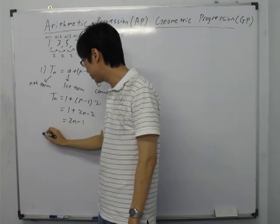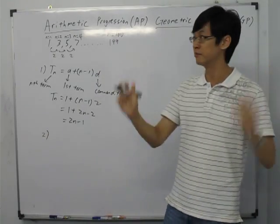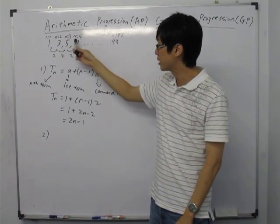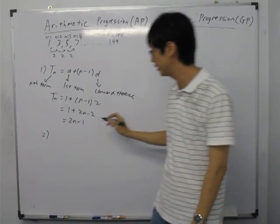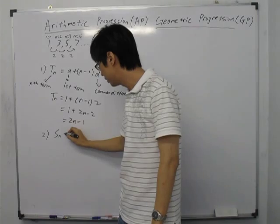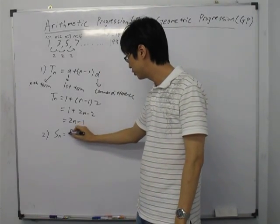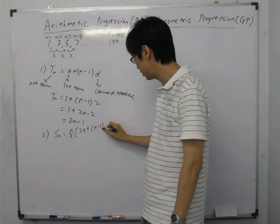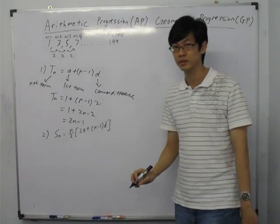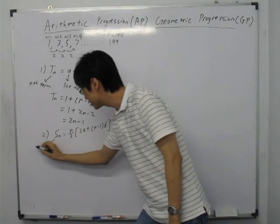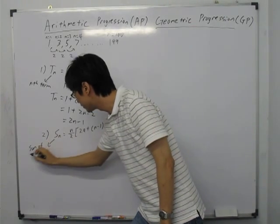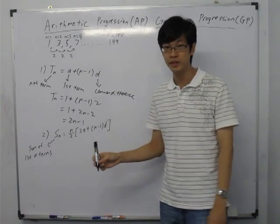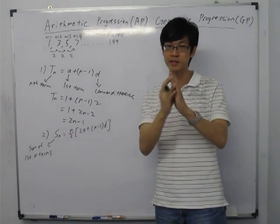This is the first formula you need to be familiar with — the N-th term. The second formula, also very important, is the sum of the first N terms. That means we take the first term plus the second plus the third and so on all the way up to the N-th term. This is given by the formula SN equals N over 2, multiplied by (2A plus (N minus 1)D). SN stands for the sum of the first N terms. So if it's S5, I'll be finding the sum of the first 5 terms.